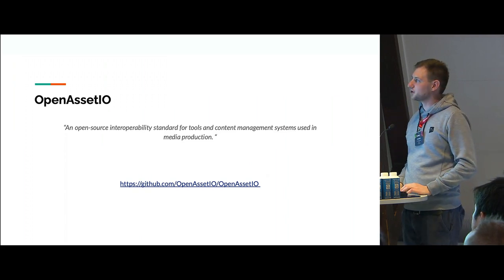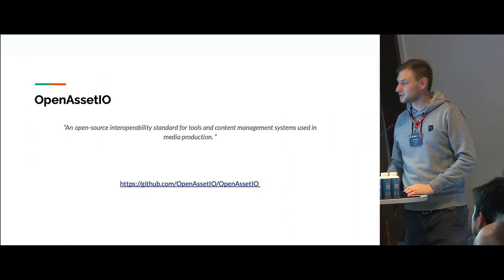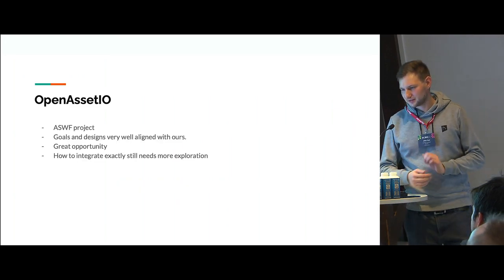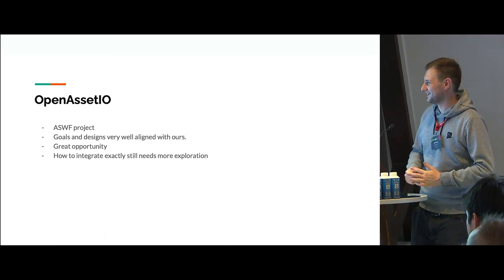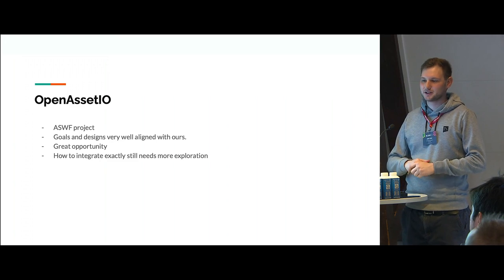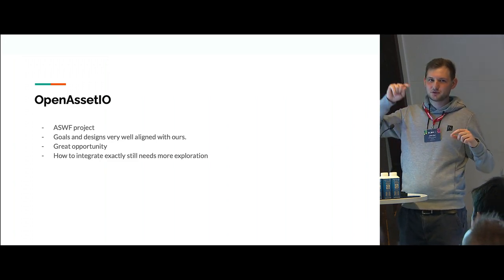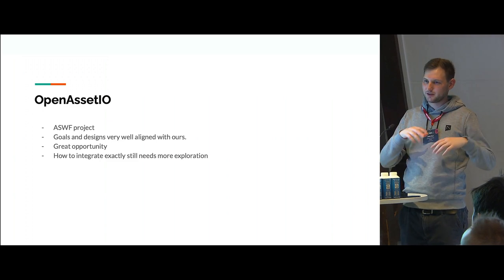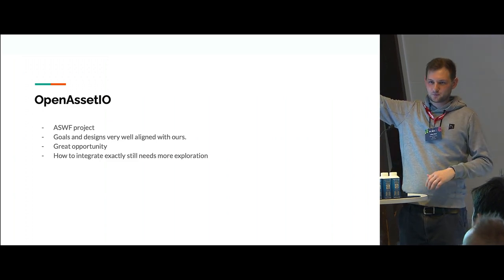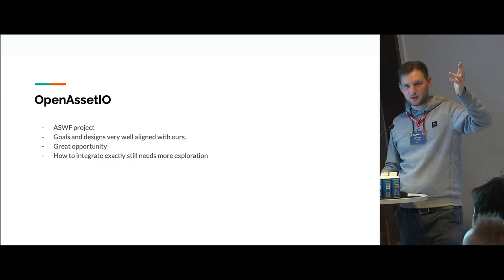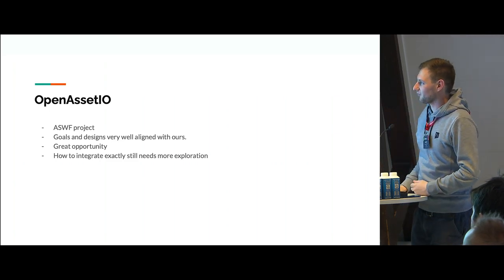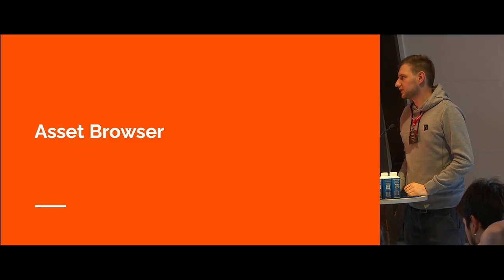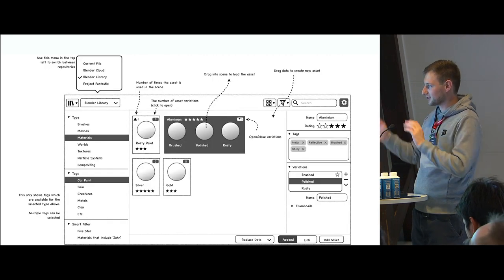OpenAssetIO is a pretty new project — an open source interoperability standard from the Joint Academy Software Foundation — that allows DCCs like Blender to communicate with asset and production management software via a standardized API. So you could have Blender speaking to Shotgun, Watchtower, Kitsu, that kind of stuff. For us it's a great opportunity to add more compatibility, and we really want to support it.